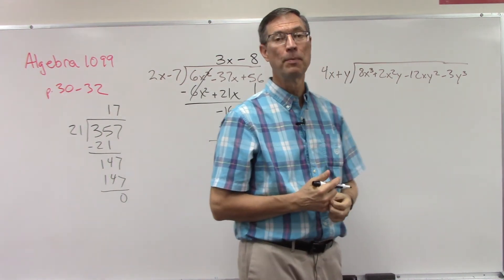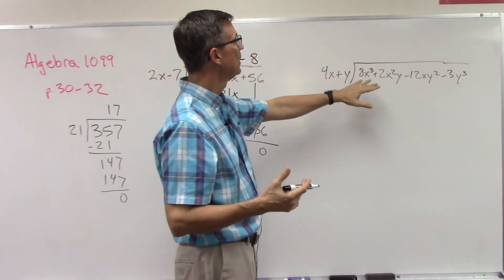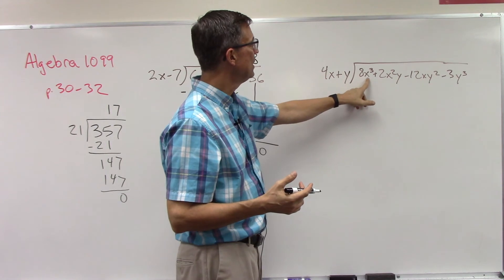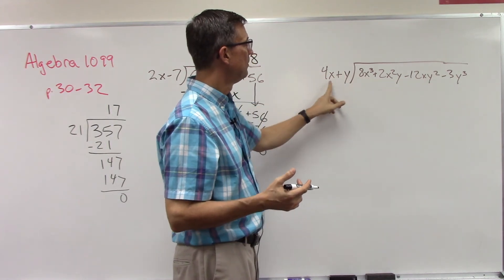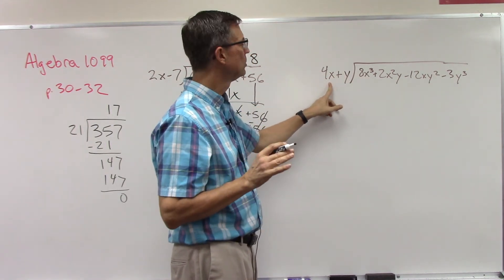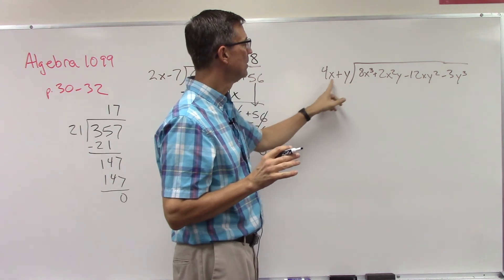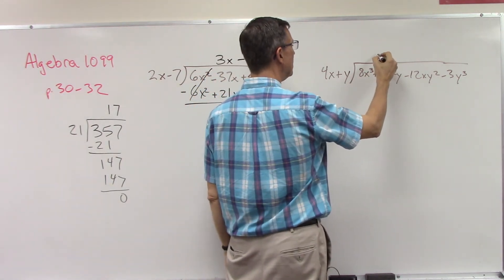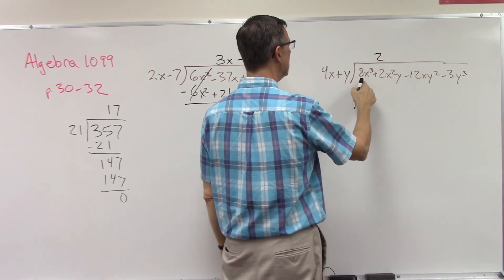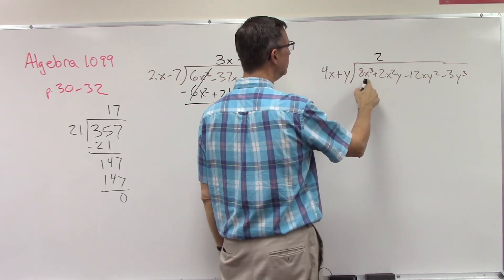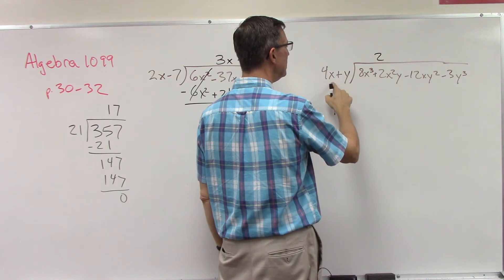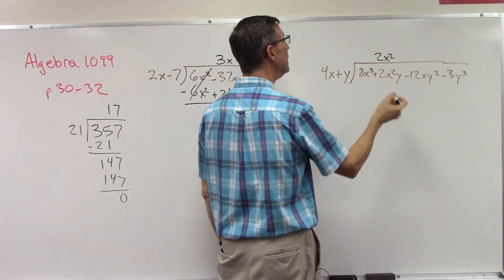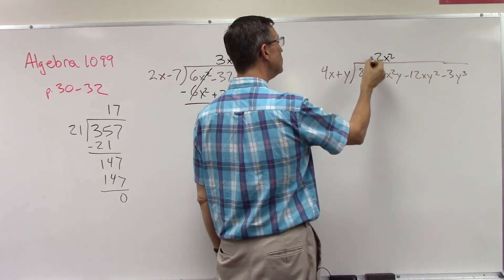Let's divide just the 8x to the third by 4x, just that much. 8 divided by 4 is 2. What is x to the third divided by x? x squared.